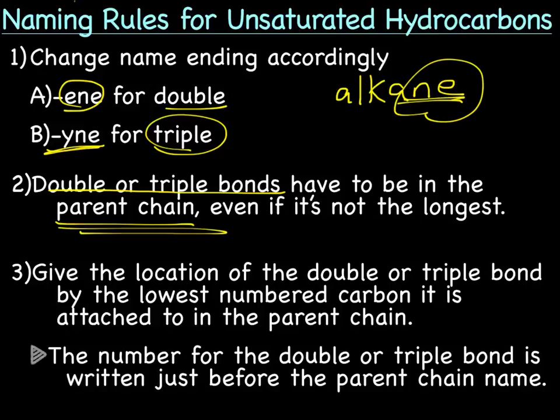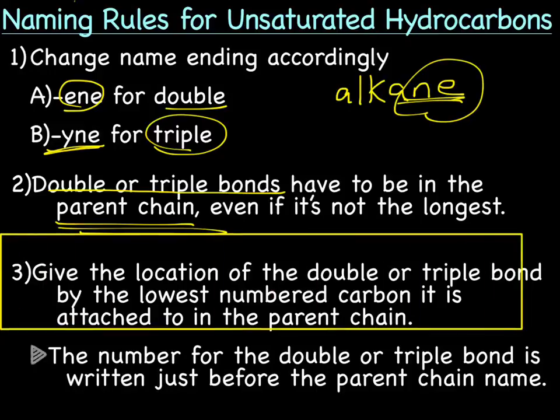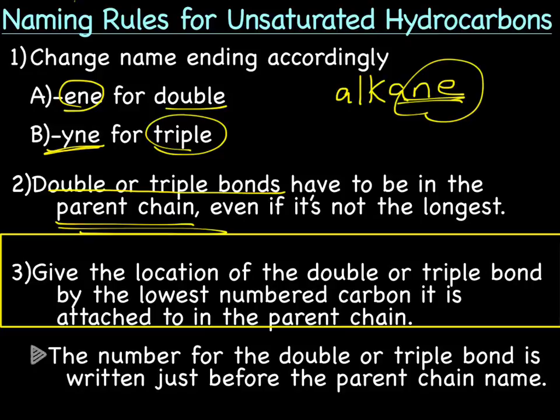When naming alkenes and alkynes, we also need to give the location of the double or triple bond by the lowest numbered carbon it is attached to in the parent chain. So we have another number this time to locate the double or triple bond. And the number for the double or triple bond is written just before the parent chain name.